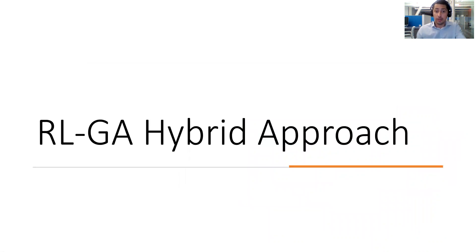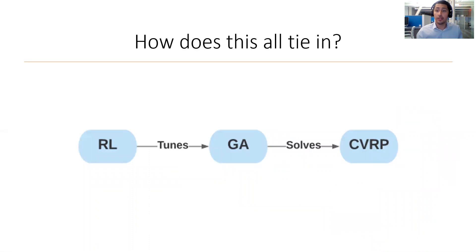So how does now, so our proposed approach, how does this all tie in? All right, so here's a simple overview of what the process is. We have instances of the CVRP which are solved through genetic algorithm, which in turn are tuned by the reinforcement learning.